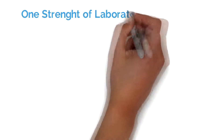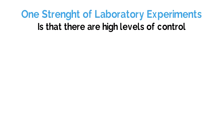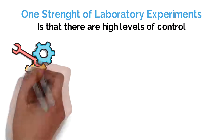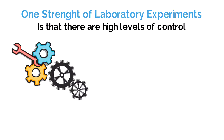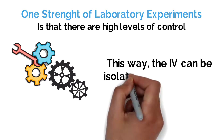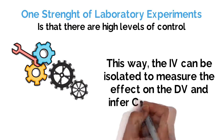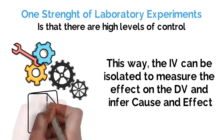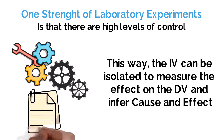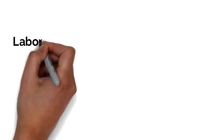One strength of a laboratory experiment is that there are high levels of control, meaning that it is objective. Therefore, extraneous variables are avoided and independent variables can be isolated to measure the effect on the dependent variable, and therefore we can infer cause and effect.